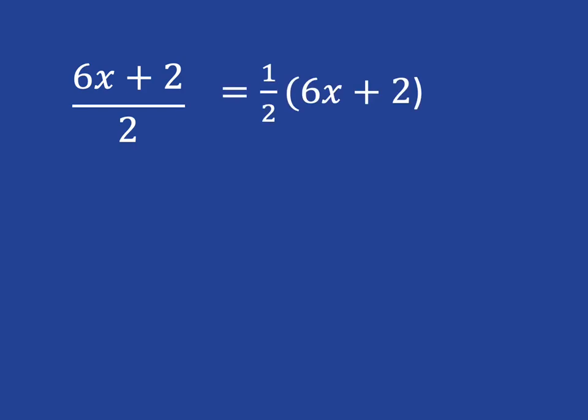And so what we've got is 1/2 times (6x + 2). This means we can just use the distributive law we've always been using. Half times 6x gives me 3x, and a half times plus 2 gives me plus 1.